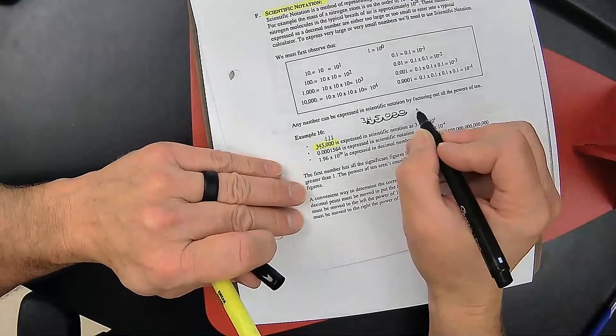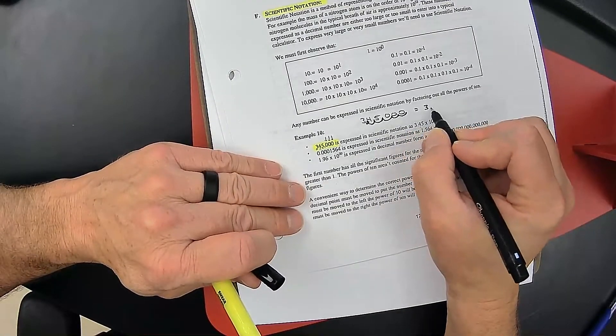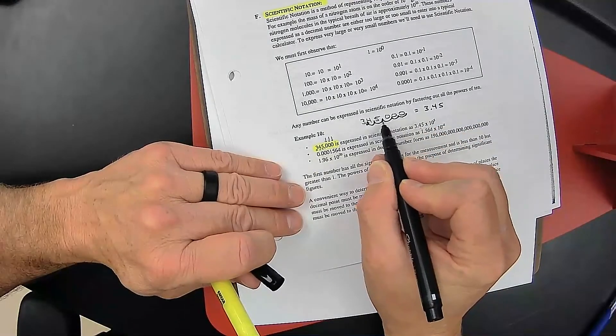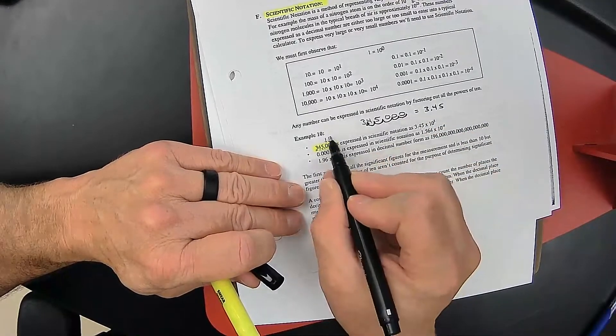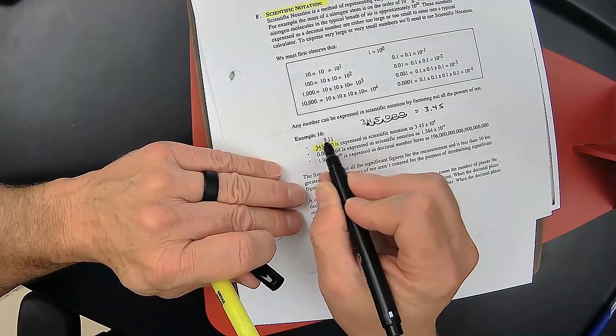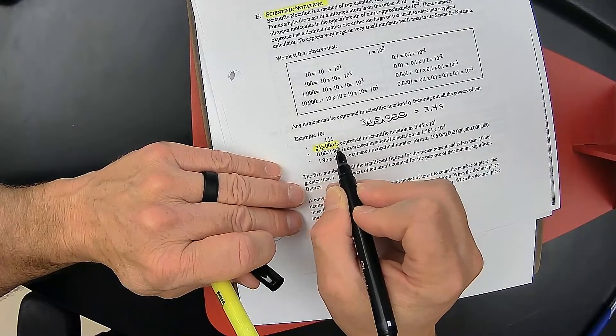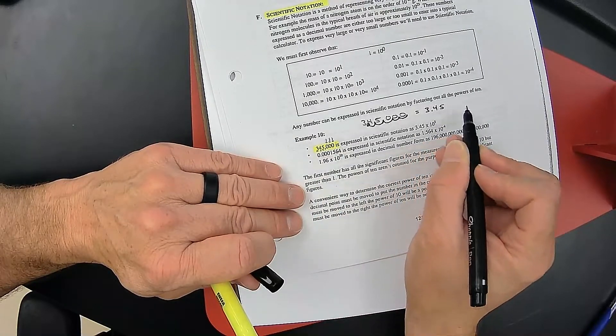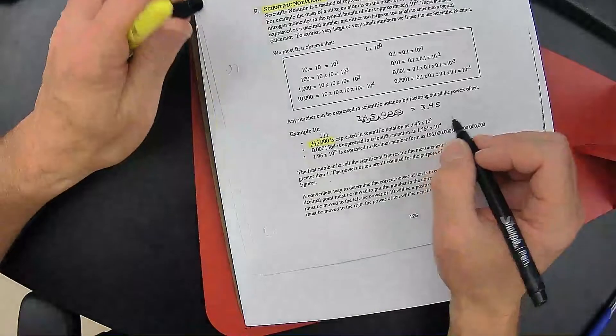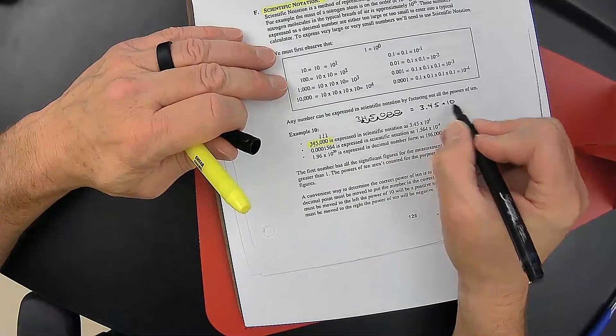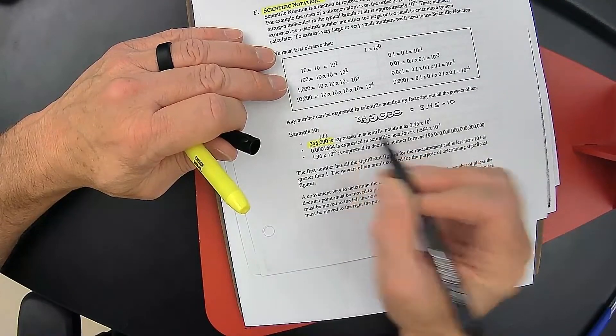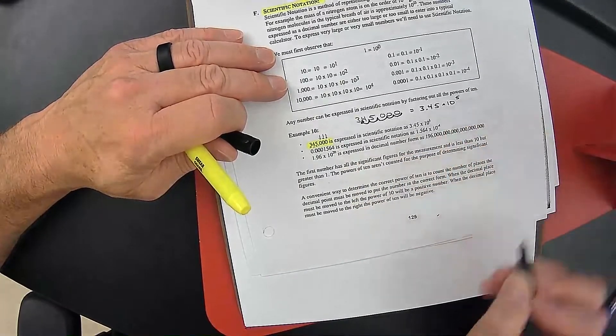But when I write my final answer I'm going to write it as 3.45. I'm not going to include the zeros here because the zeros are not significant. If they were significant I would have had to put 3.4500. Then it's times 10 to the 1, 2, 3, 4, 5. I just count how many places I moved it over.